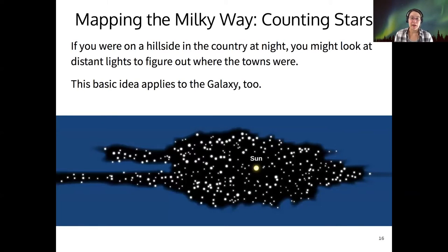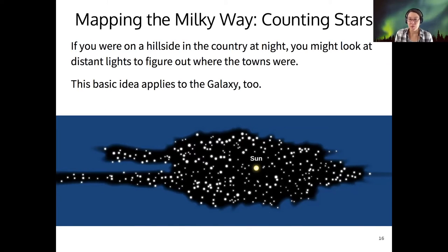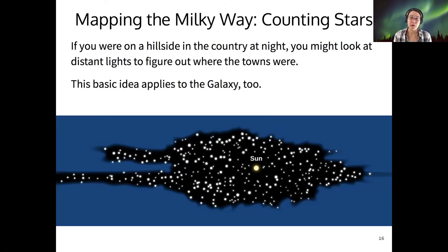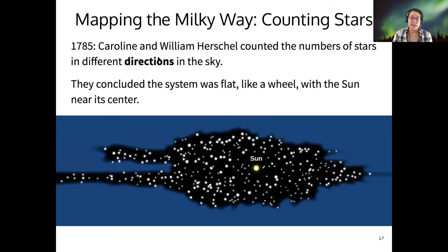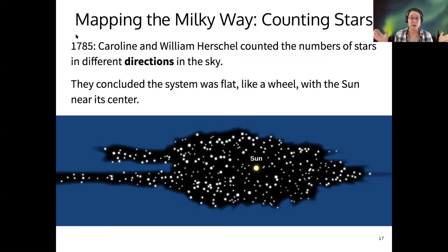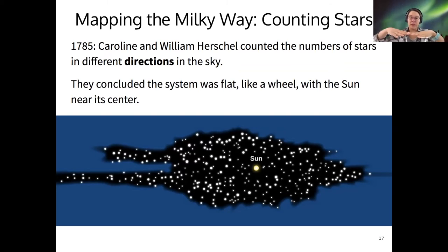The first attempt to map the galaxy was made by William and Caroline Herschel. This was a very simple method: they just looked in different directions and counted the stars. In 1785, they cataloged the numbers of stars in each direction, and what they found was that the system of stars they plotted out was flat like a wheel, and the sun, they assumed, was near the center of that system.